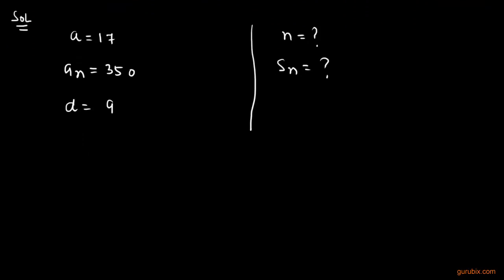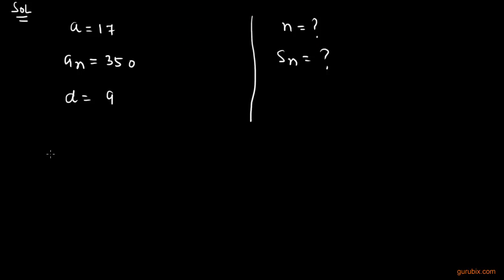We shall first use the general term to find the value of n. The general term is an = a + (n-1)d, and an = 350, a = 17. We have to find the value of n and d is given as 9.